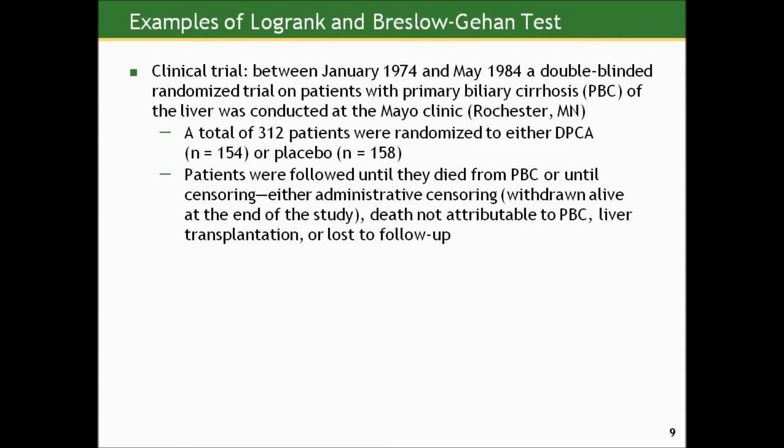Here's another example. It's a famous clinical trial conducted between January 1974 and 1984 — a double-blinded randomized trial on patients with primary biliary cirrhosis, PBC, a disease of the liver. This was conducted at the famous Mayo Clinic in Rochester, Minnesota. It's a much larger study than the previous one.